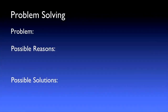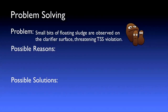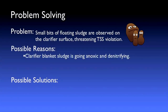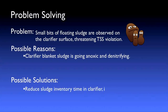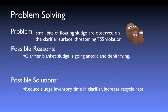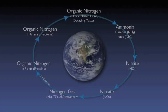Finally, during your afternoon stroll through the plant, you notice small bits of floating sludge accumulating on the surface of the clarifier. It becomes obvious that your sludge blanket at the bottom of the clarifier is going anoxic and denitrifying, causing sludge to float due to the generation of nitrogen bubbles. Letting instinct take over, you spring to action by increasing the recycle rate, reducing sludge inventory time in the clarifier and preventing this unwelcome denitrification.